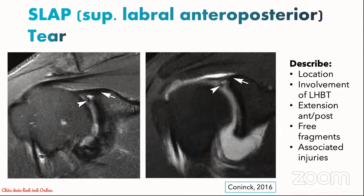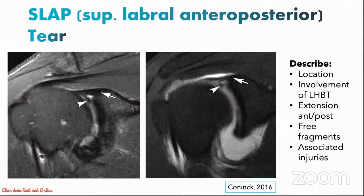A good guide to describing SLAP lesions is that instead of worrying about the classification, you should focus on describing the location of the labral tear, deciding if there is any involvement of the long head biceps tendon, delineating the extension of the labral tear whether anteriorly or posteriorly, and describing any free fragments and associated injuries within the shoulder joint.